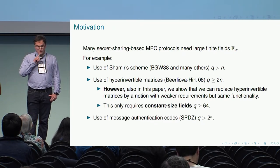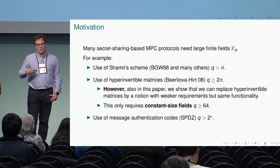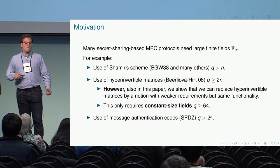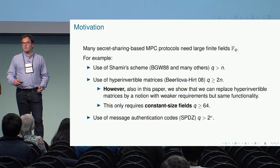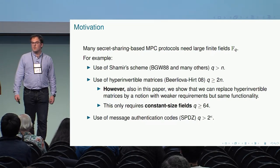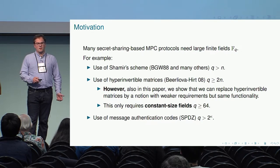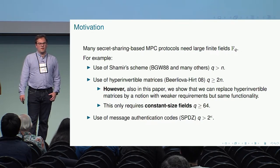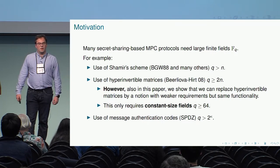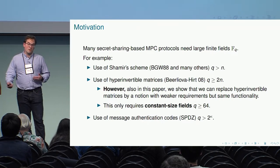I also wanted to mention that you also need the field to be large in other types of protocols—for example, computationally secure protocols. If you are using message authentication codes, you are going to need the field to be large, because the probability that an adversary cheats and is not caught is inversely proportional to the size of the field. You saw some manifestation of that in the talk yesterday by Ariel: depending on whether you have a large or small finite field, you needed to use a different protocol.